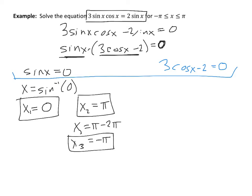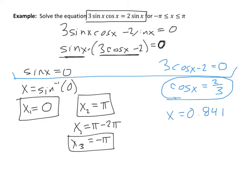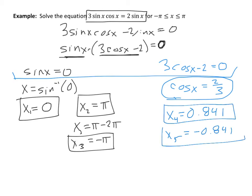For the other factor, moving terms gives cosine x equals 2/3. We actually already solved this in the previous example — the solutions for cosine x equals positive 2/3 in radians are x ≈ 0.841 and x ≈ negative 0.841, both on the given interval. So this equation on this interval has five total solutions.